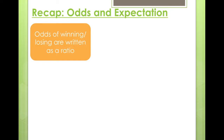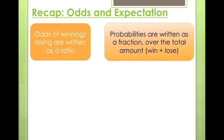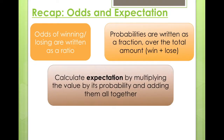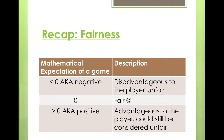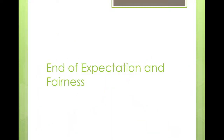To recap: odds of winning and losing are written as a ratio; probabilities are written as a fraction over the total amount. You now know how to calculate expectation by multiplying each value by its probability and adding them all together, and how to calculate expected gain using: probability of winning × net gain + probability of losing × loss. A reference table shows that a negative expectation is disadvantageous, zero is fair, and a positive expectation is advantageous. That is the end of expectation and fairness.